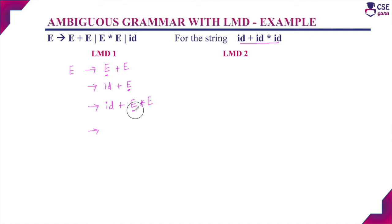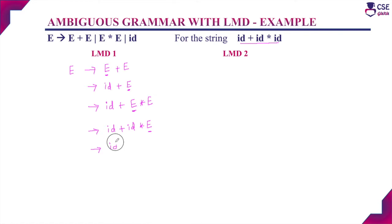Choose the leftmost non-terminal and apply E → id. Next, only one non-terminal remains; apply E → id. Now we have derived the string id + id * id. This is the first leftmost derivation.